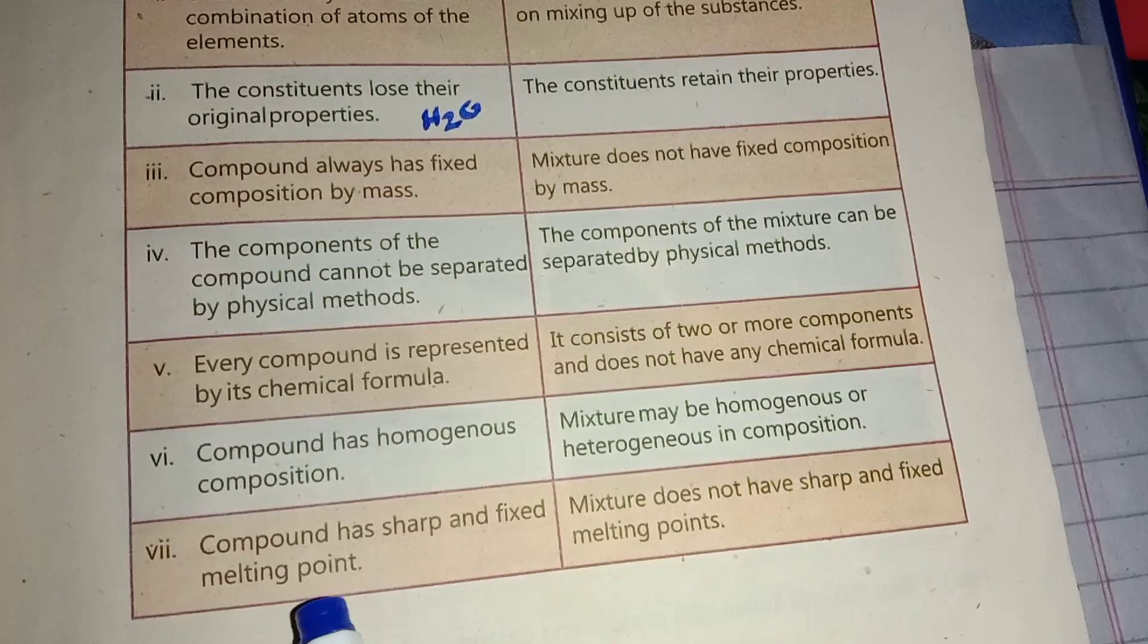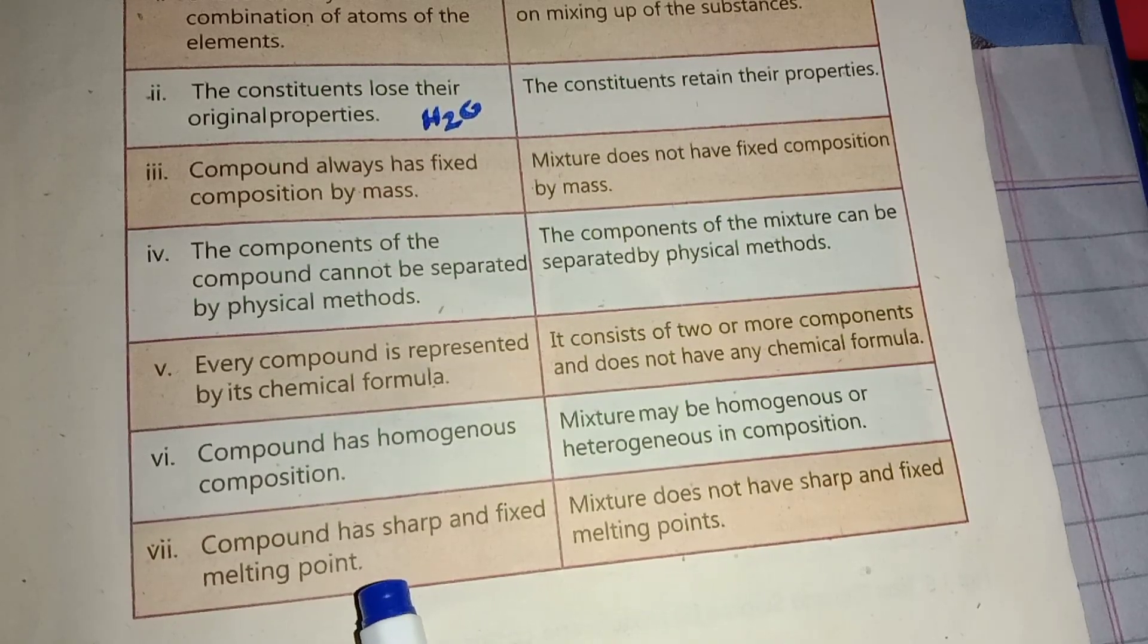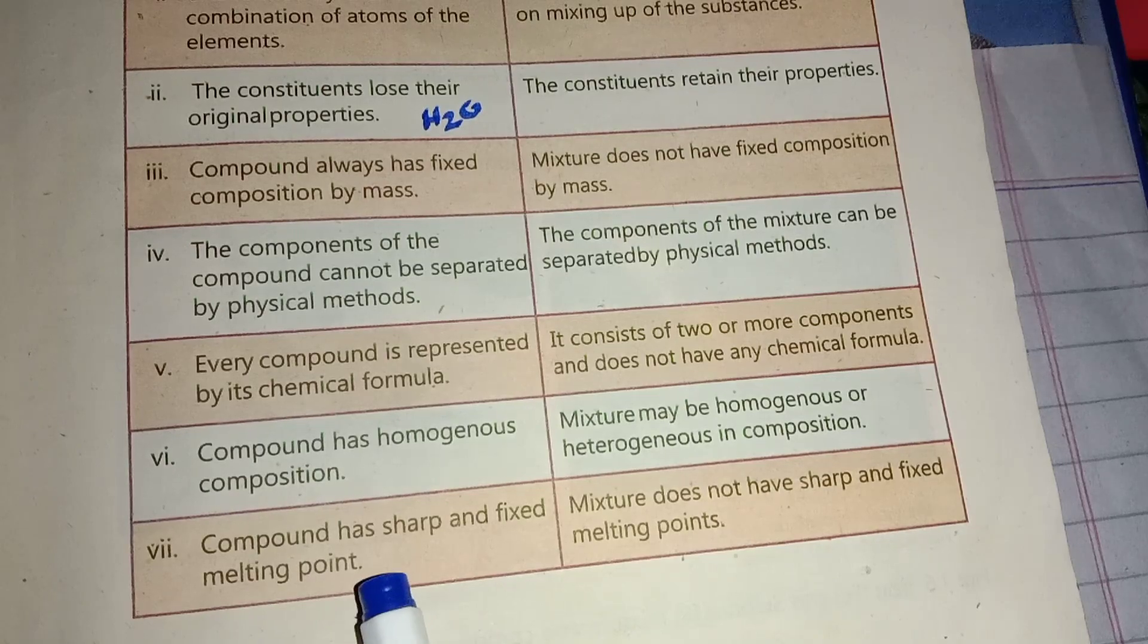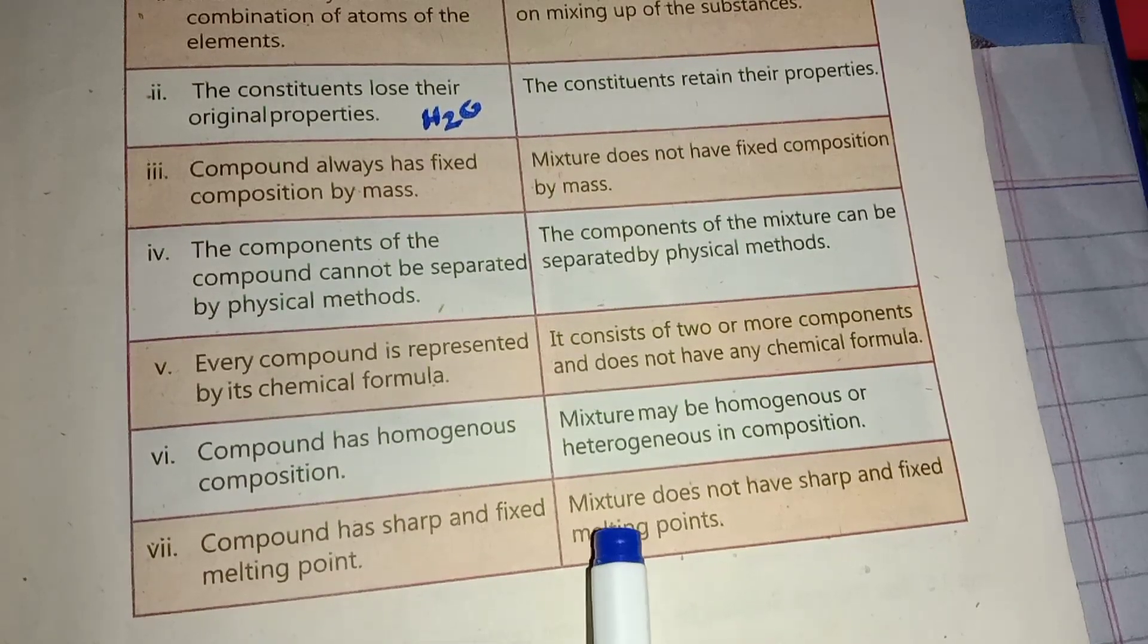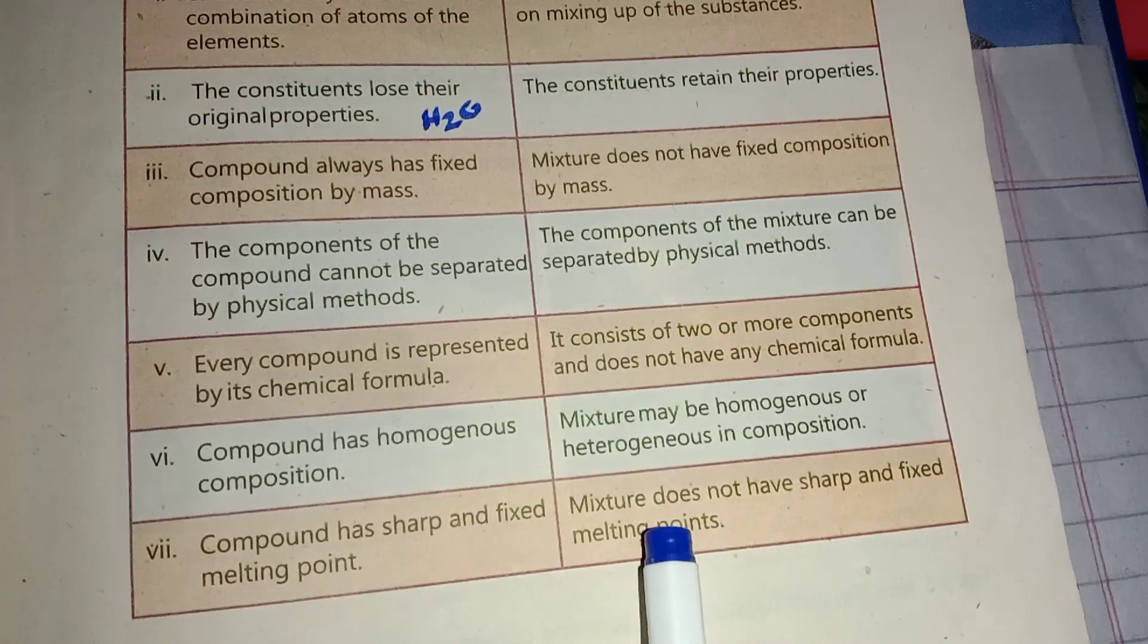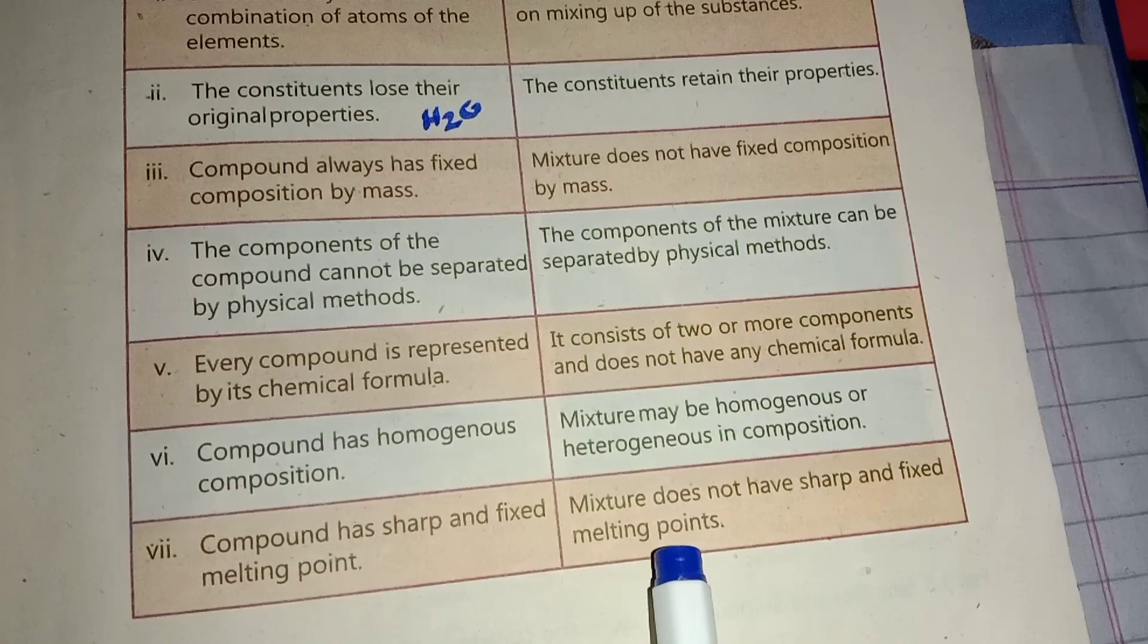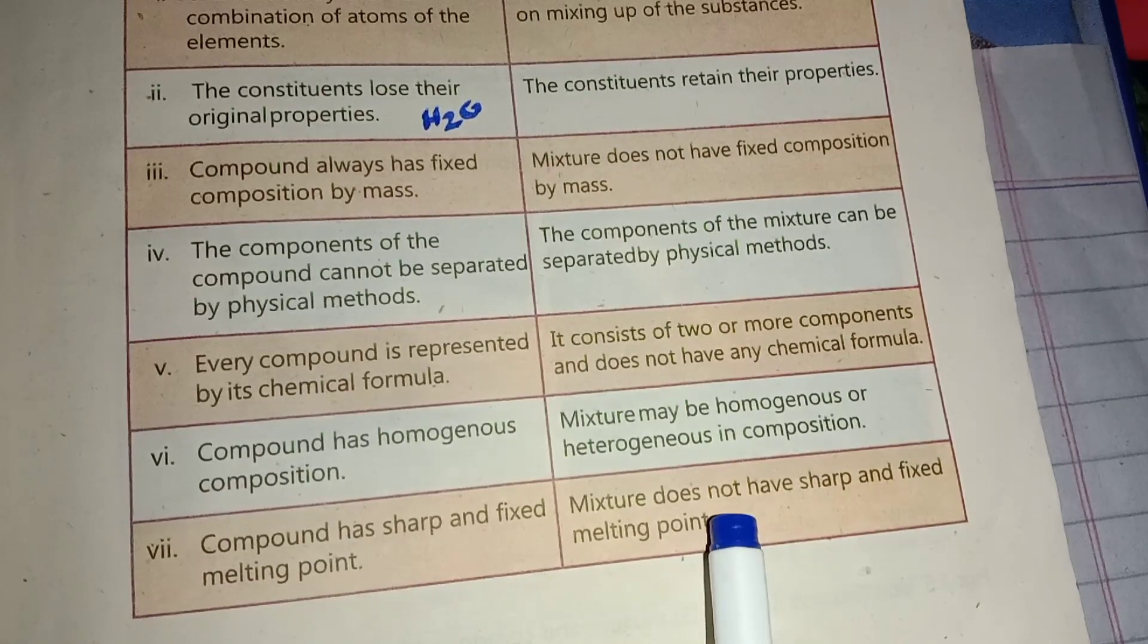Seventh difference: Compound has sharp and fixed melting point. We can determine the exact melting point value. Mixture does not have sharp and fixed melting point.